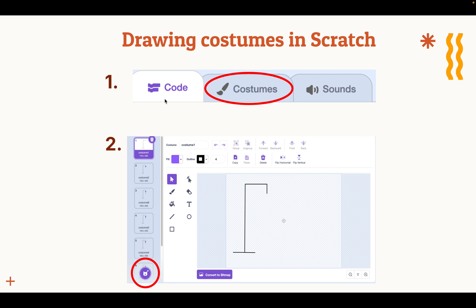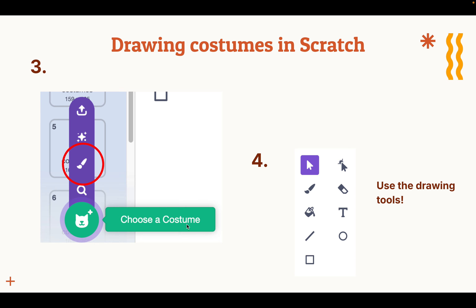Here's how you draw a costume in Scratch. You go to the sprite you want to draw under. Then in the top left of Scratch, there is this little area where you can select costumes. Once you get to this interface, you can hover over the purple button in the bottom left of the screen. Once you hover over that button, you should see the paint tool and you can click on that. Then finally, you will have a canvas to draw whatever you want, and you can use the drawing tools to do that.